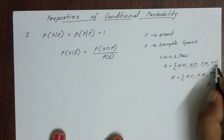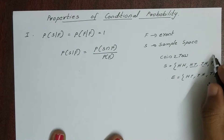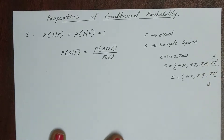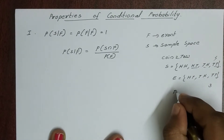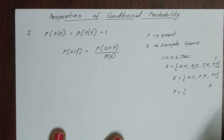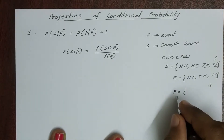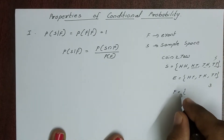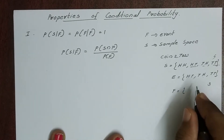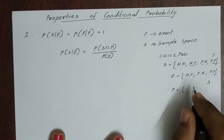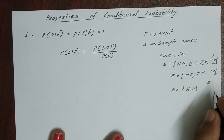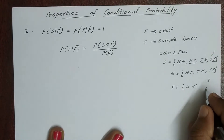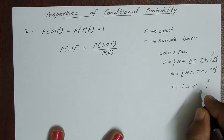The sample space has four elements. If you take one event — say, head appears twice — that gives us the element head-head. There are three elements where tail appears at least once.